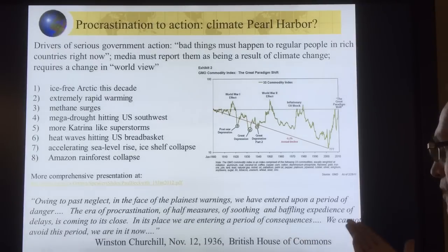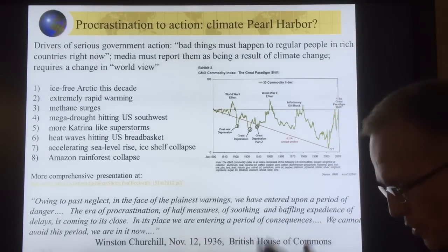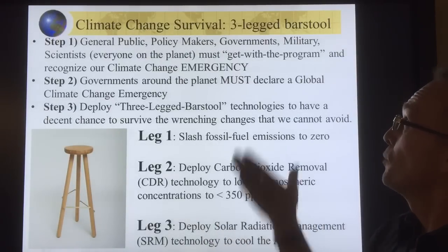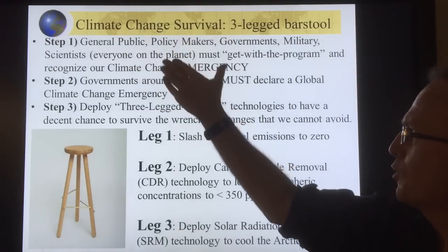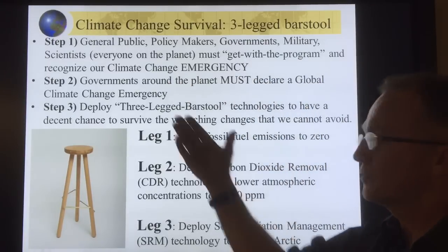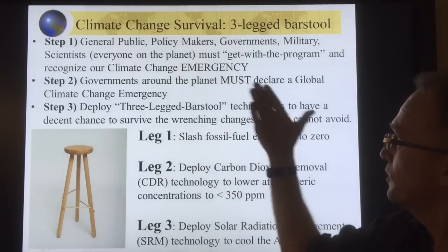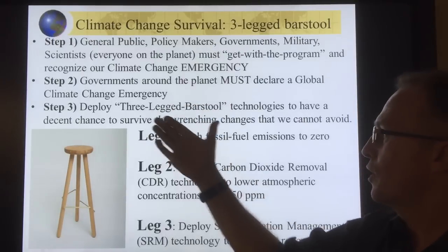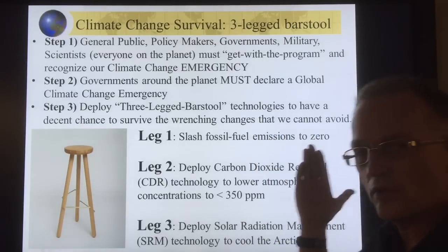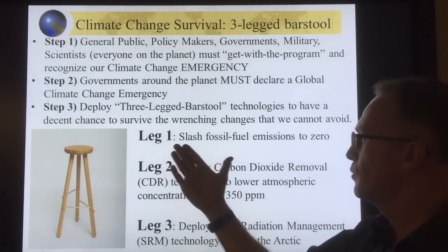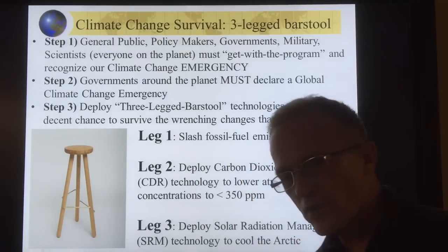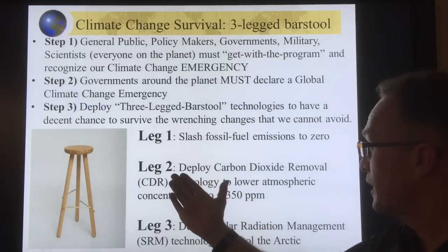Owing to past neglect in the face of plainest warnings, we have a period of consequences — no more procrastination, half measures, or delays. Churchill said this just before World War Two. This is what we have to do to survive climate change: the three-legged barstool approach on an emergency basis. Step one — general public, policymakers, governments, military, scientists, everybody on the planet must recognize the climate change emergency. Governments must declare a global climate change emergency.